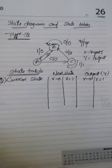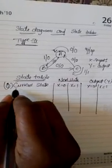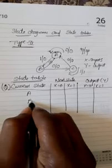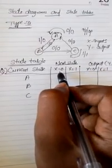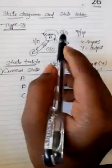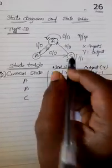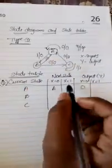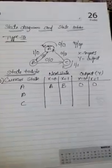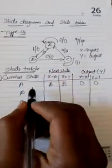Let's go to the state table representation. We have three states: A, B, C. At state A, when x equals 0, the state doesn't change — it remains at A and the output is 0. When the input is 1, the state changes from A to B and the output is 0.